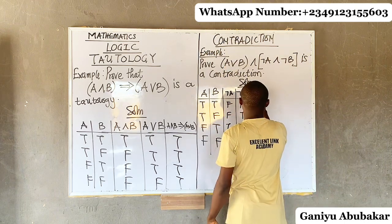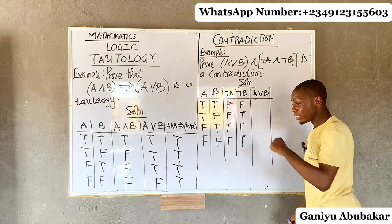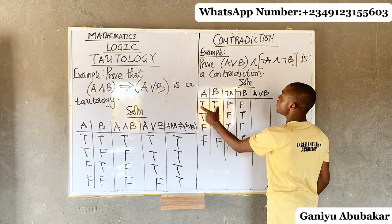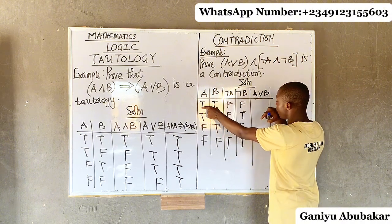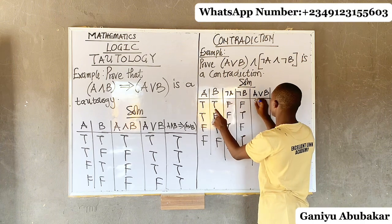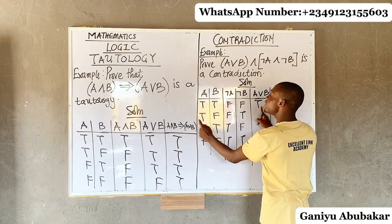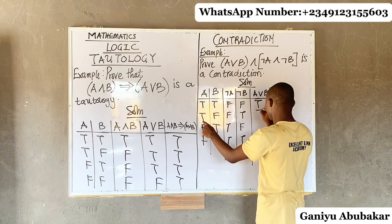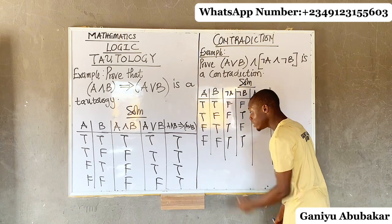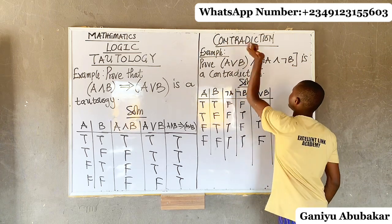Now let's get A OR B. For OR, if it contains at least one true the answer is true. So: true OR true — there's a true, becomes true; true OR false — there's a true, becomes true; false OR true — there's a true, becomes true; false OR false — no true here, becomes false. That's how you find OR.